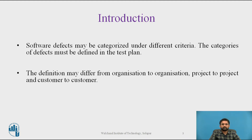A software defect is some kind of error, flaw, or mistake from the development team which prevents the software from smooth working. It directly affects software quality — how smooth and reliable your software is. The definition may differ from organization to organization, project to project, and customer to customer.